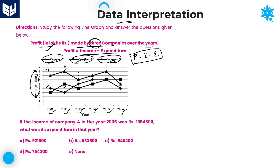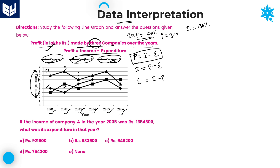Whenever problems belong to profit, income, and expenditure, we always consider expenditure as 100%. If expenditure is 100% and profit is, say, 30%, then income percentage will be 130%. From the formula, income is equal to profit plus expenditure, and expenditure is equal to income minus profit. Out of these three variables, if you know any two, it is very easy to get the third. Based on all this information, we need to solve the questions accordingly.